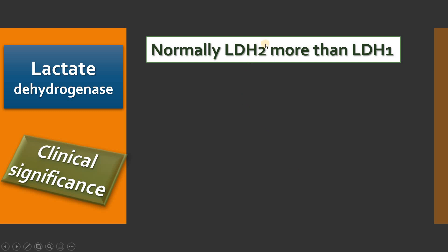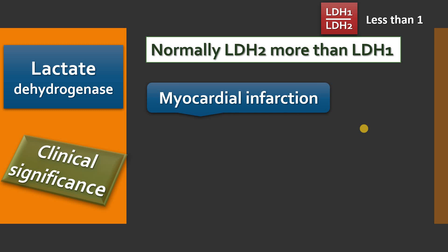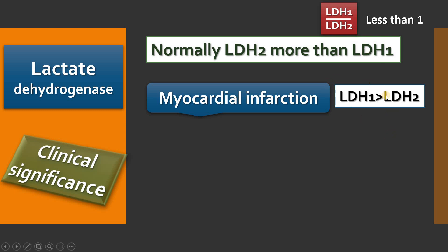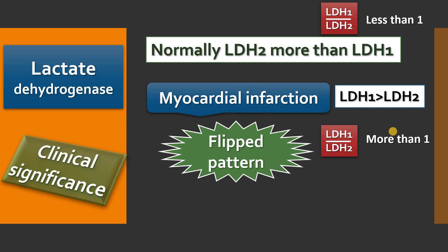In normal individuals, the level of LDH2 isoenzyme is higher compared to LDH1, so the ratio of LDH1 to LDH2 is always less than 1 in normal circumstances. But in myocardial infarction, LDH1 is elevated — both are elevated, but the elevation of LDH1 is greater than LDH2 — so the ratio of LDH1 to LDH2 becomes more than 1. This is described as the 'flipped pattern,' especially in myocardial infarction.